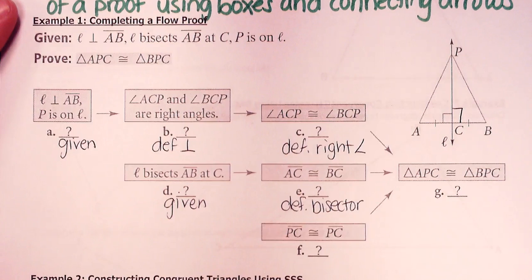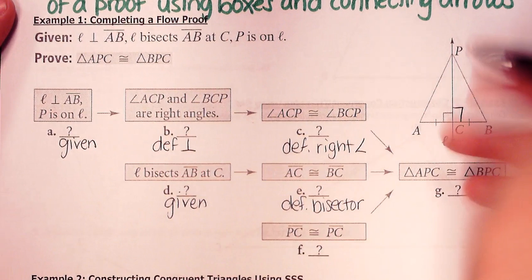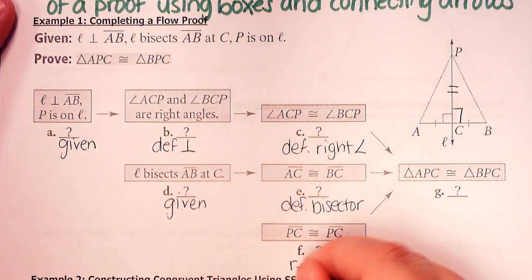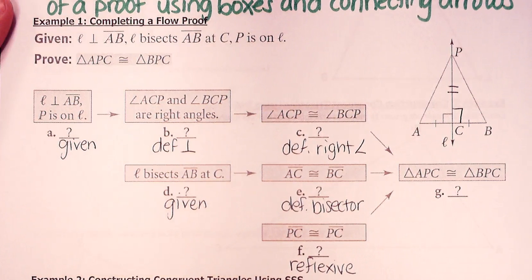And then the final step here, PC is congruent to itself. Now, that's not marked in the diagram, so let me just mark that there. If you have a segment in both triangles, which we do there, it's got to be congruent to itself. That's the reflexive property.